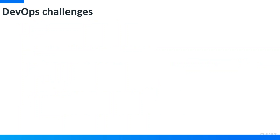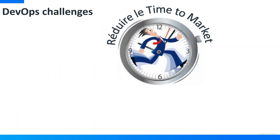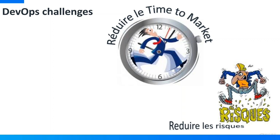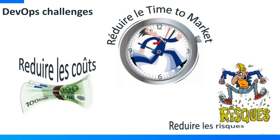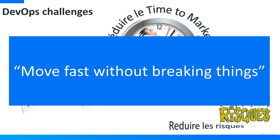Dans le domaine DevOps, Deployment Automation va vous permettre de réduire le time to market — être capable de pousser en production les changements produits par vos équipes de développement. Cela va également réduire les risques, au travers de processus de déploiement répétables et sécurisés, réduisant tous les risques inhérents aux opérations manuelles. Le but final étant de réduire les coûts. Notre slogan : « Move fast without breaking things », c'est-à-dire déployer rapidement sans casser ce qui existe déjà.